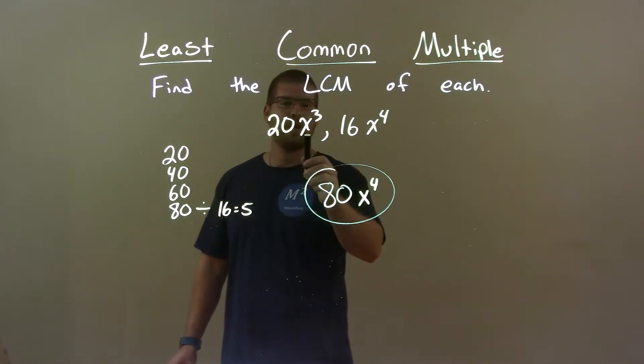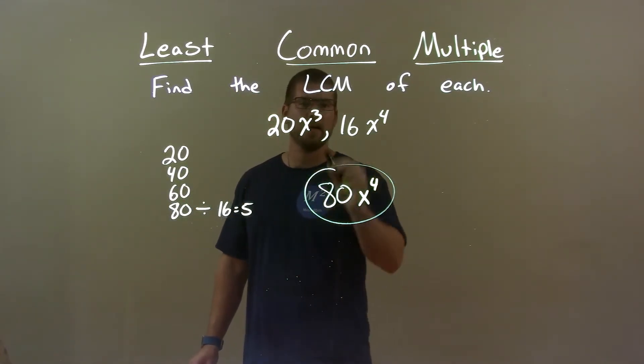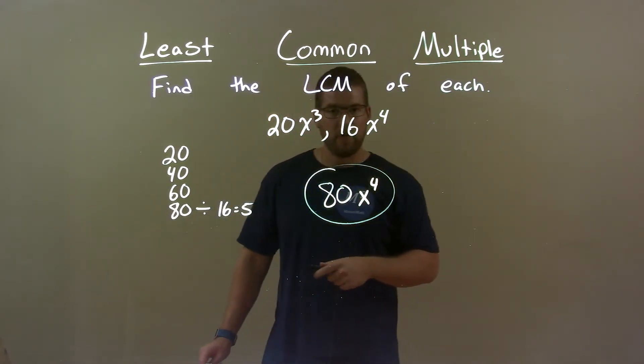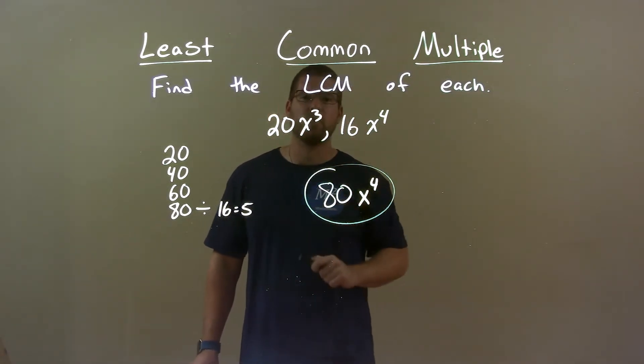So we got 80 here. Then we try to encompass the most variables that we can, right? 3x's here, 4x's there so we need to have 4x's. So my final answer is 80x to the fourth power.